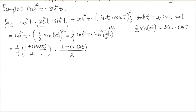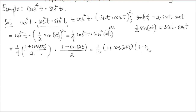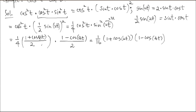Because the inside angle is u, it's 2 times u, and 2 times 2T is 4T. So altogether we have 1/4 times 1/4 — that's 1/16 — and (1 + cos 2T) times (1 − cos 4T).